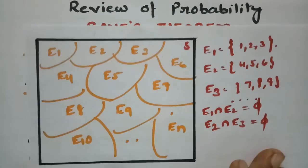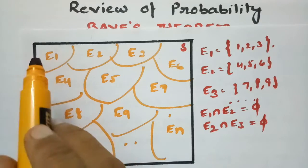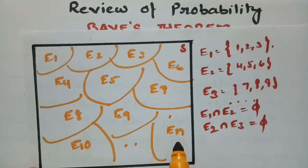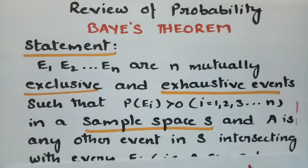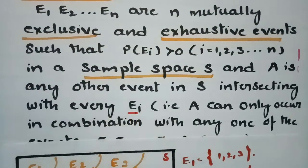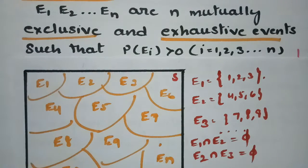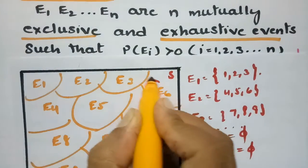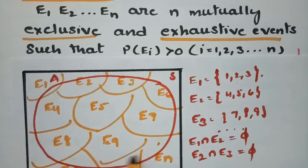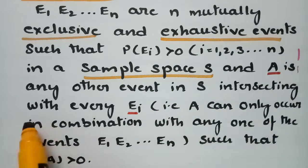E1, E2, E3 and so on EN are N mutually exclusive and exhaustive events such that each probability — probability of E1, probability of E2, E3 and so on, probability of EN — are positive, where I equals 1, 2, 3 and so on, in a sample space S. And A is any other event in S intersecting with EI. The set A is drawn intersecting every EI.